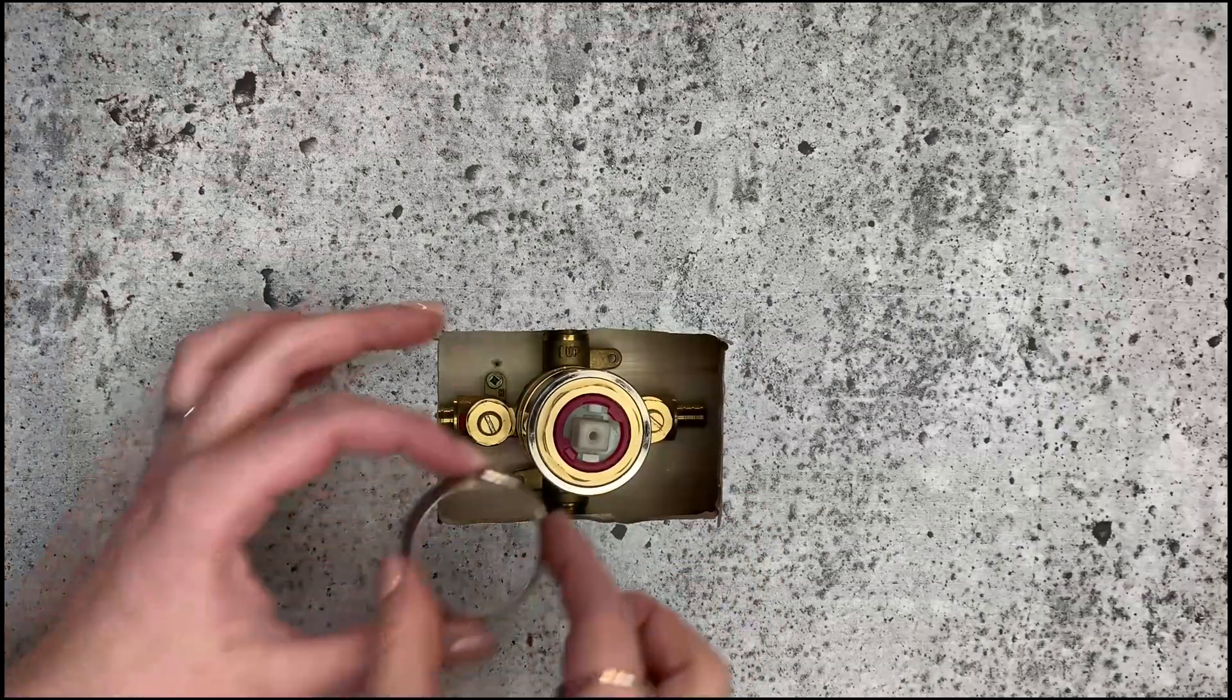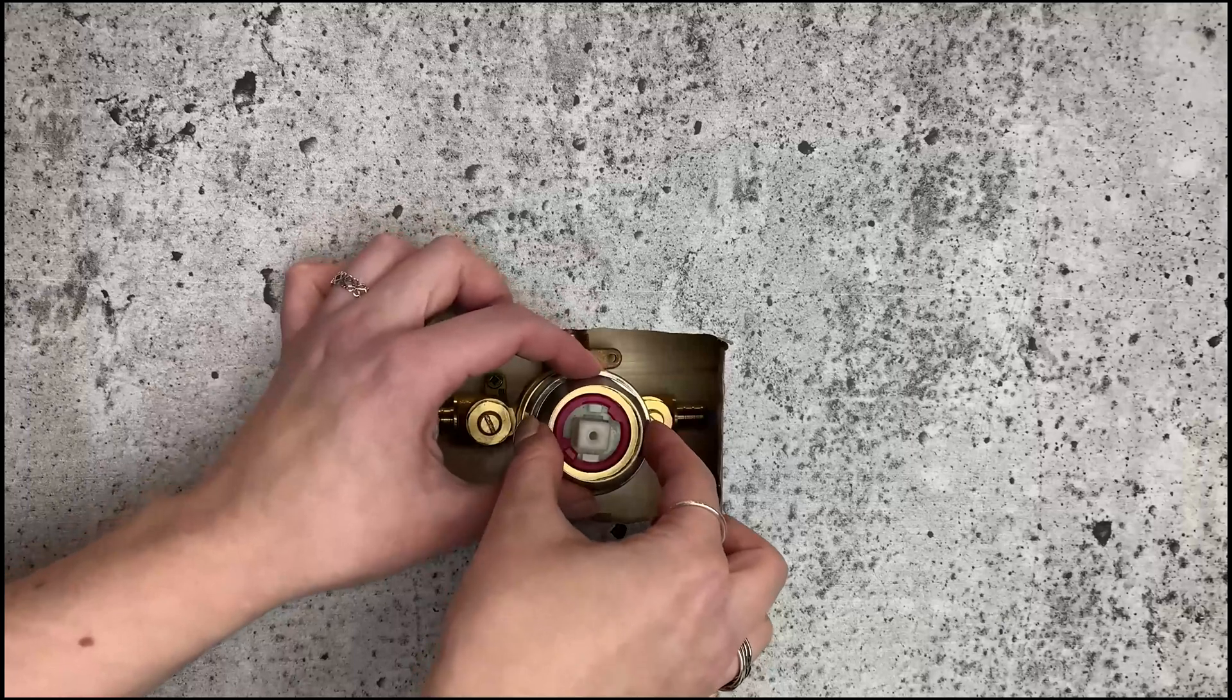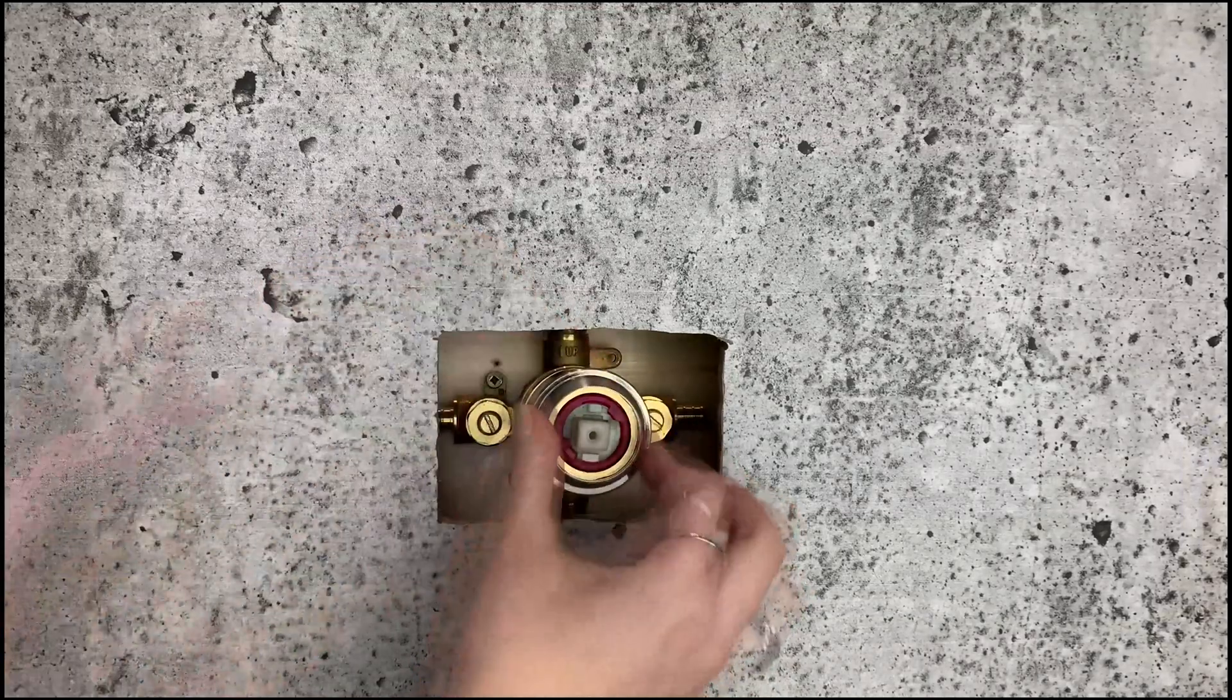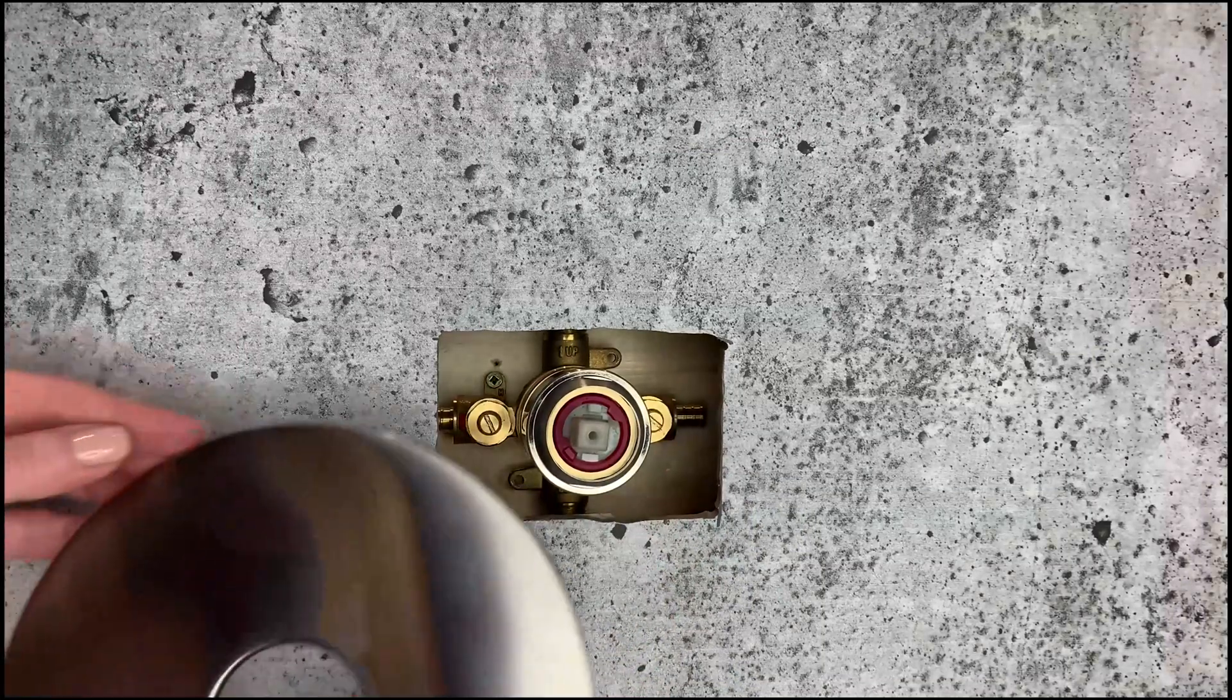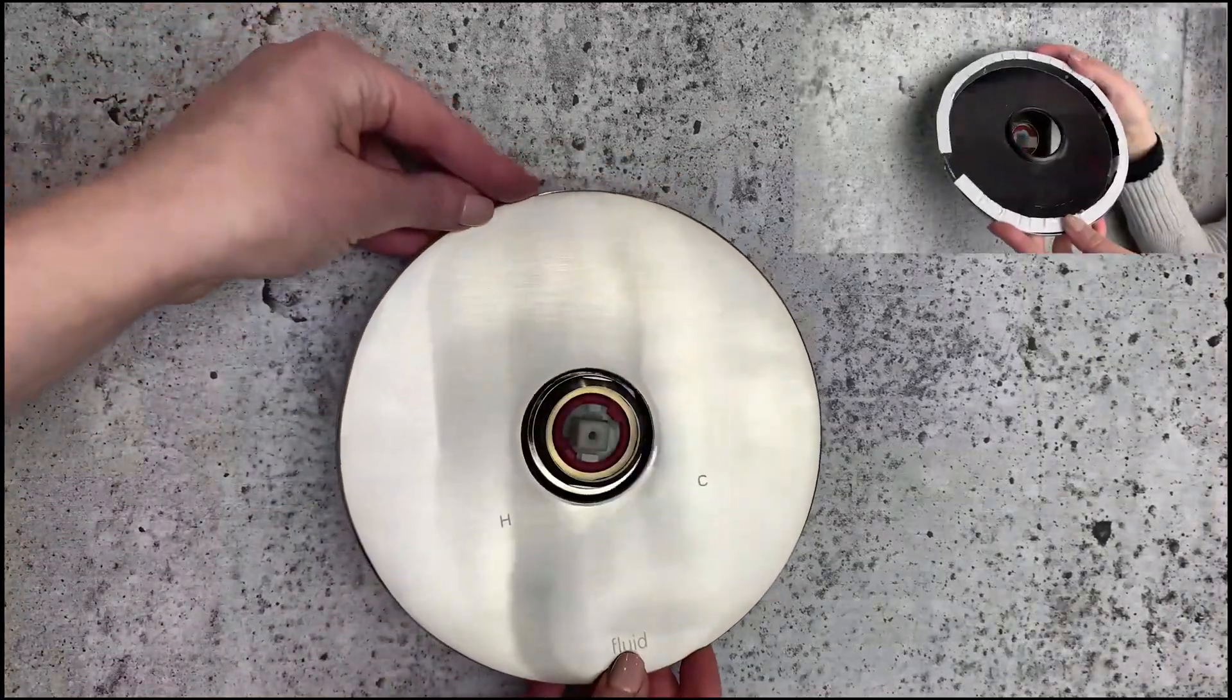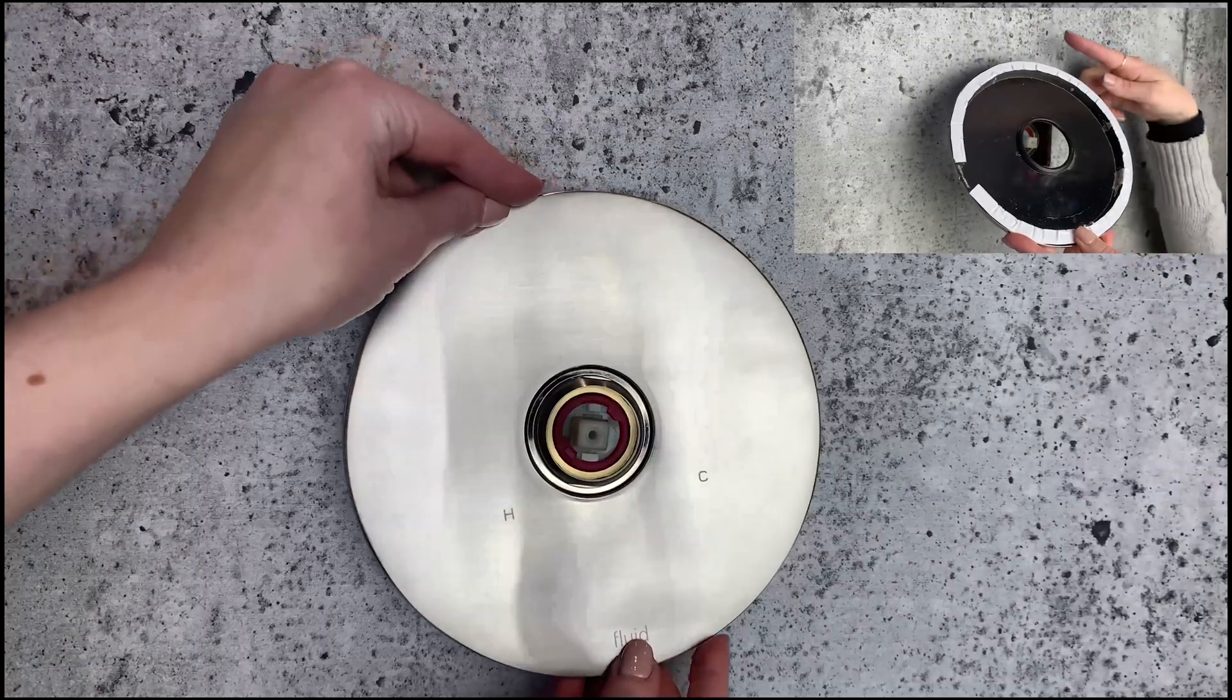It's now time to install the trim plate. There's a strip of adhesive on the inside of the plate. Simply remove the protective paper and press the plate into place, making sure that the Fluid logo is on the bottom and properly centered.